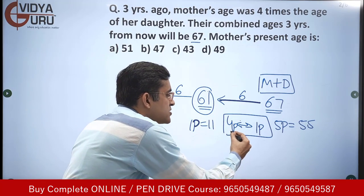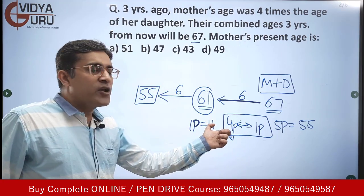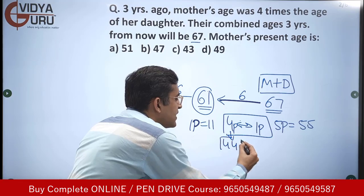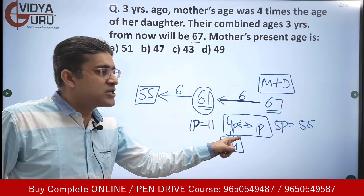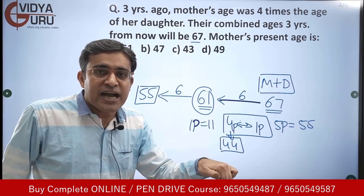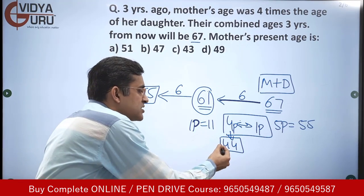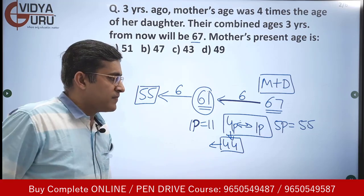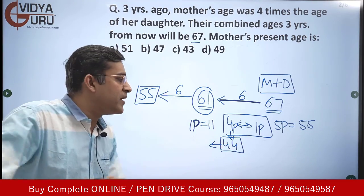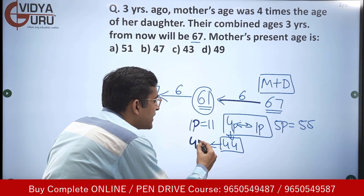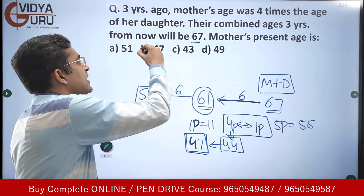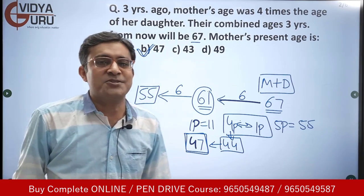Three years ago, mother's age was four parts — four into 11 equals 44 years. That is three years ago. In today's time she will be three years older, so 44 plus 3 equals 47. The mother's present age is 47. Option B — that's the answer. No use of X and Y, smart methods.